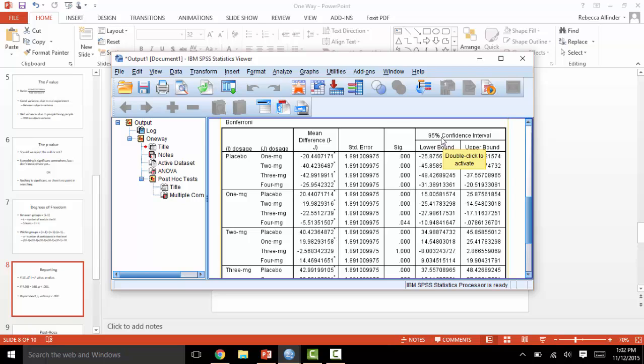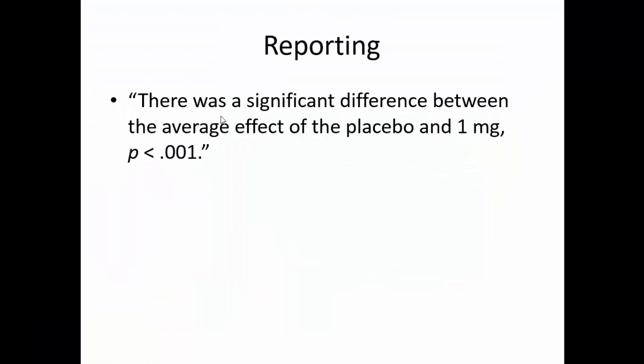The mean difference will indicate the difference between the average score for each of the levels, and the 95% confidence interval is for the mean difference. For instance, the mean difference between the placebo and one milligram is negative 20.44, and the 95% confidence interval would be reported as negative 26 and negative 15. In most cases, this would simply be written up as there was a significant difference between the average effect of the placebo and one milligram, p less than 0.001.